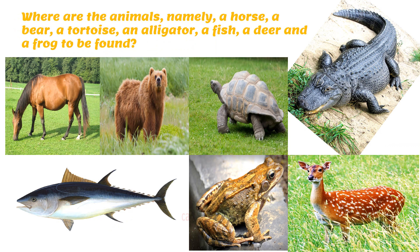Now think about this: where are animals like a horse, a bear, a tortoise, an alligator, a fish, a deer, and a frog to be found? Are they all found in one place? No. Some animals live on land, some animals live in water, whereas there are some animals like the frog that live both on land and in water.